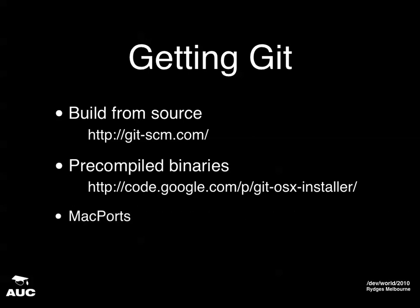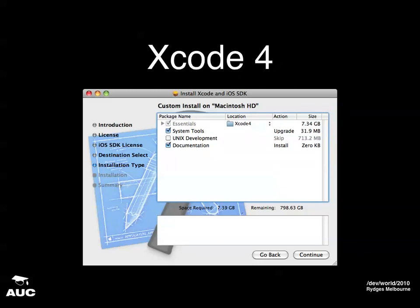Another option is MacPorts — don't do it with MacPorts, just don't. Your fourth option is to just wait, because Git is coming in Xcode 4. I really wish I could show you some of Xcode 4, but Apple still has a big confidential banner on the Xcode 4 discussion forum. It will be installed as part of the system tools package. You might have to get the pre-compiled binaries if you have the early developer previews, but I think the latest one does install that package by default.